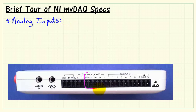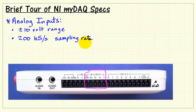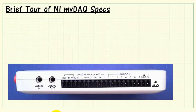The analog inputs are located right here. These inputs have a plus-minus 10 volt range. They are limited to plus-minus 10 volts, so make sure you do not exceed that voltage range. 200 kilo samples per second sampling rate, 16-bit resolution, DC coupled, and they have in excess of 10 gigaohms for input impedance.